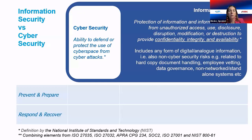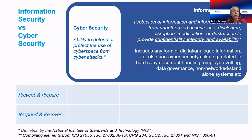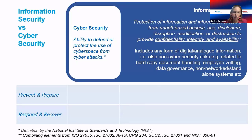Information security also deals with digital, analog, and non-cyber security risks such as employee vetting processes, data governance, and non-networked or standalone systems. It's important to recognize that not everything is cyber security related — we need processes for other forms of security when it comes to handling information.